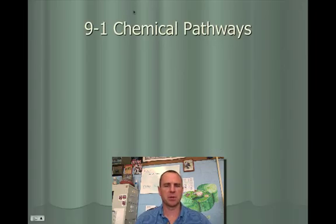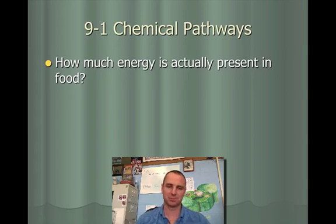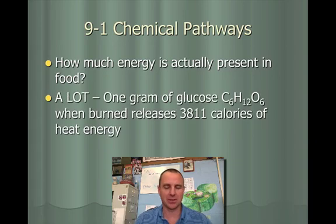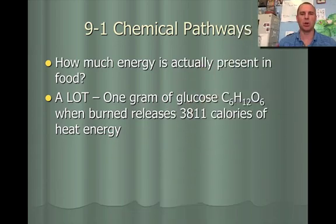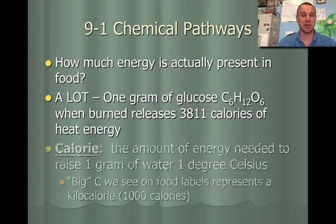Cellular respiration — when we talk about it, we have to talk about chemical pathways. The first question that comes to mind is: how much energy is actually present in food that we consume? About 1 gram of glucose — remember, glucose is made during photosynthesis — about 1 gram of that sugar, that carbohydrate, when burned releases 3,811 calories of heat energy.